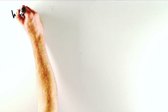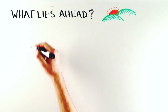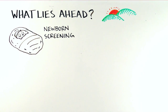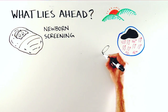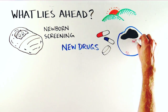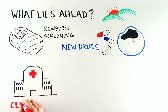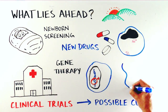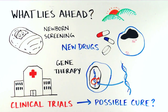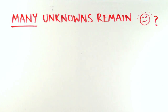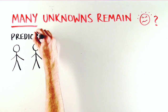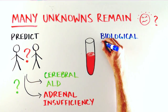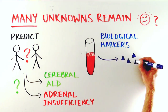So what lies ahead for ALD patients? There are many exciting advances already in progress. Newborn screening for ALD is being implemented in a growing number of US states. Scientists have found several drugs that may reduce levels of VLCFAs, and there are several exciting treatments currently in clinical trials. In fact, ALD is one of the first diseases to show promising results from gene therapy in clinical trials. But there is still much we don't know about ALD — for example, we still cannot predict which patients will develop cerebral ALD or adrenal insufficiency. Researchers are trying to identify biological markers that can predict which patients are more likely to experience each symptom.